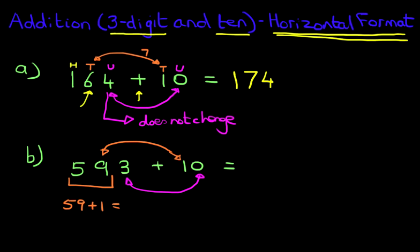Now you know what 59 plus 1 is, it is 60. So the answer therefore becomes 60, which we have got from here. And don't forget, the 3 does not change. So 593 plus 10 is 603.